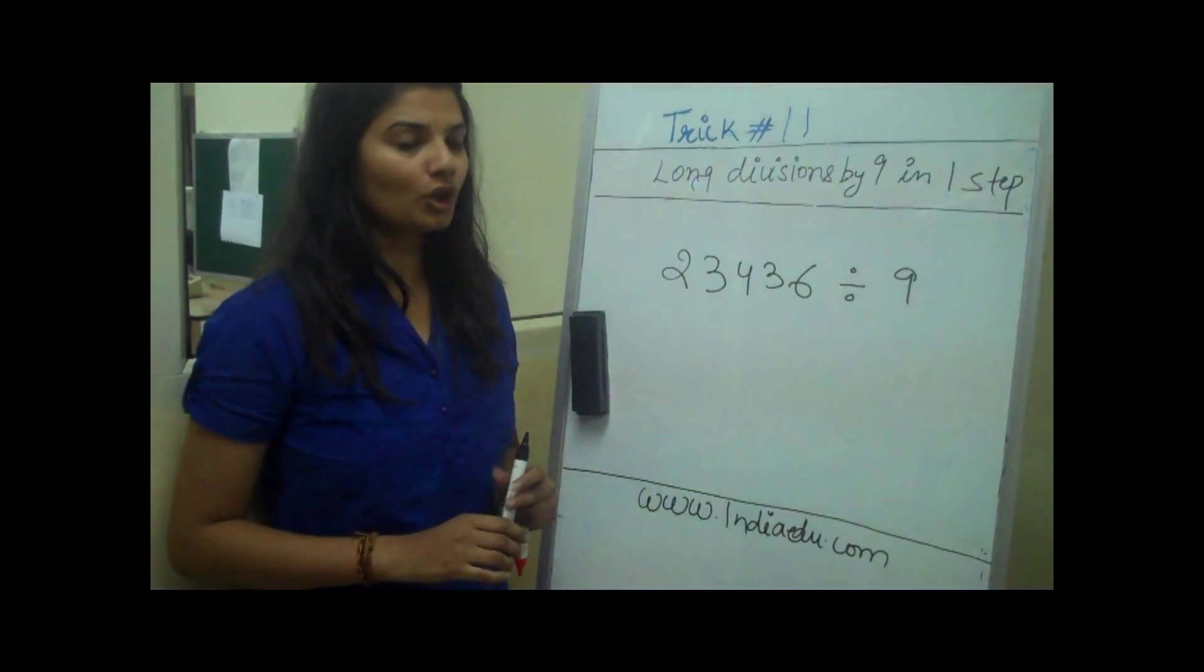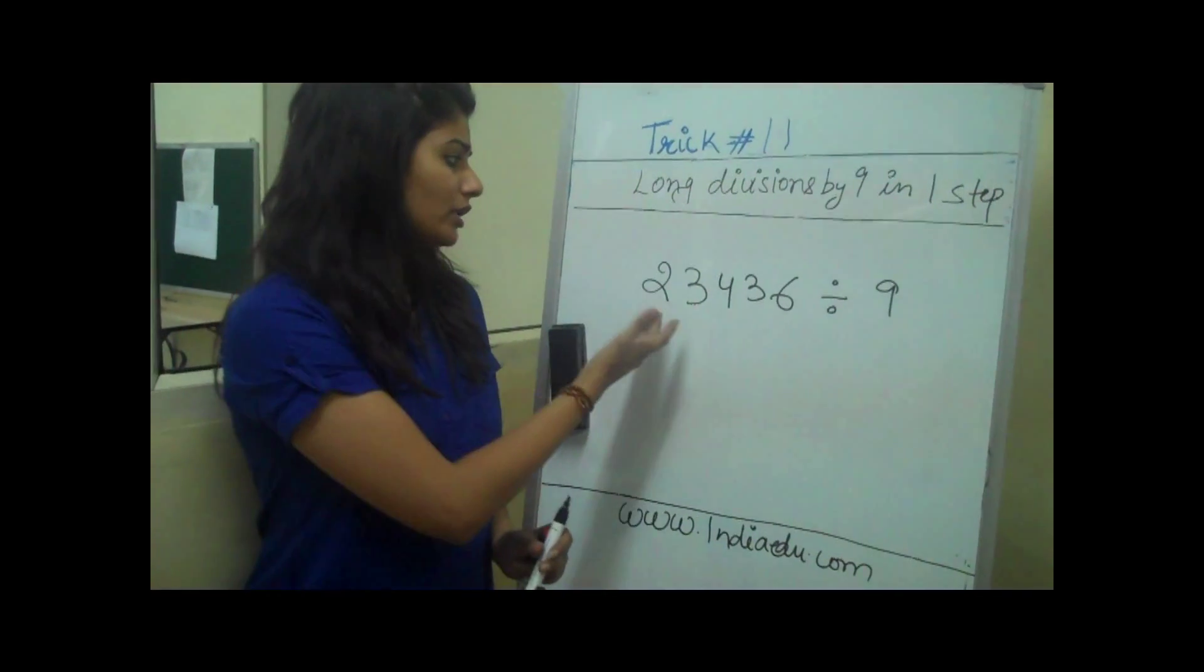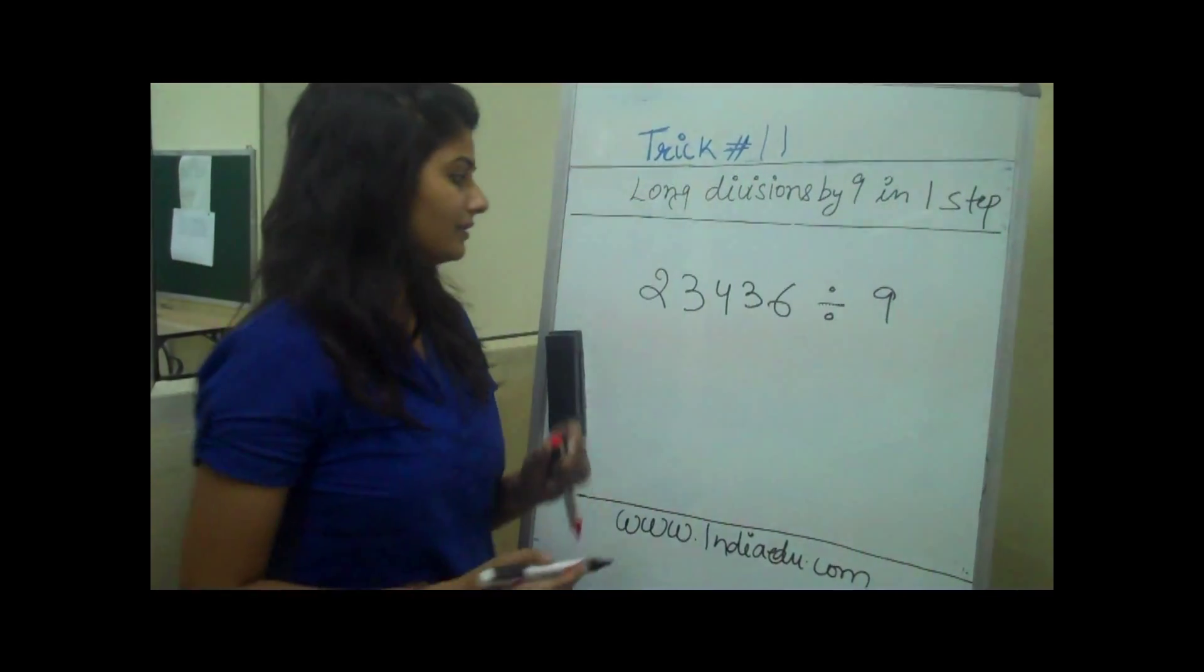Let's understand this concept with an example. If we want to divide 23436 by 9, we'll see how we do it.